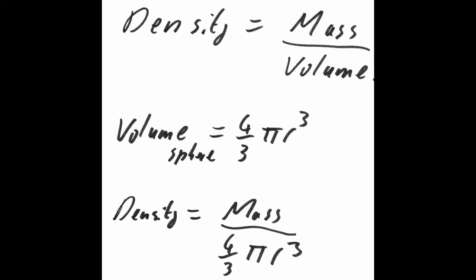The volume of a sphere is given as 4 thirds pi r cubed. We arrange the equation to give us the value of mass instead of density. Mass equals density times volume.